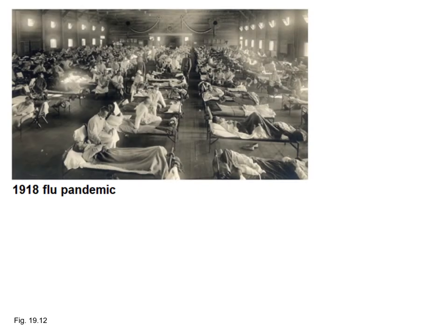Why are we worried about influenza viruses? Because we have had some very serious pandemics. You may be hearing about the 1918 flu pandemic - also called the Spanish flu - in the news. It was very serious: it killed 50 million people, infecting maybe 30 to 40 percent of the human population, with about five percent dying. People young and old were dying. This is why people are worried about flu viruses - they don't want this to happen again.